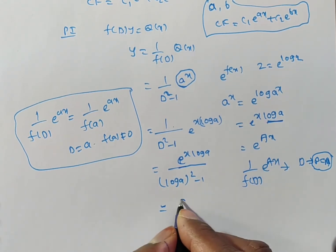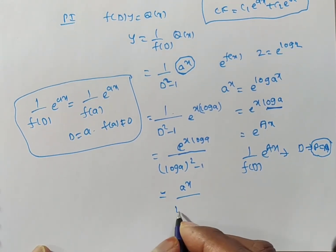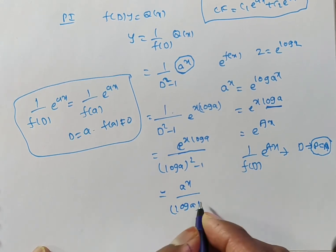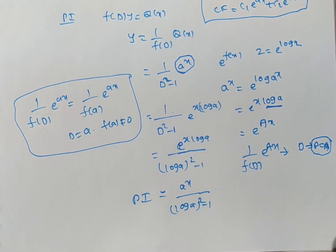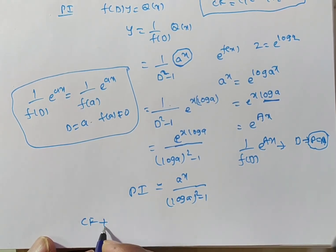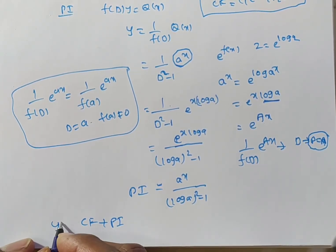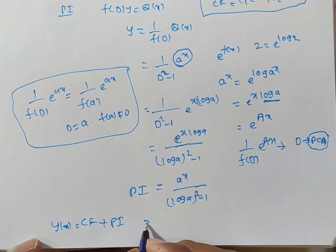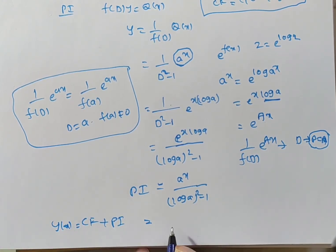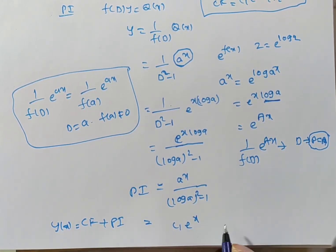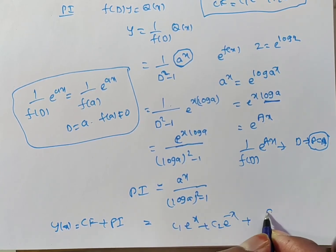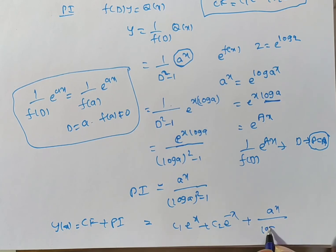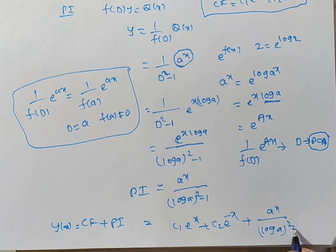Writing e^(x·log a) back as aˣ, the particular integral is aˣ / ((log a)² - 1). The general solution is complementary function plus particular integral: y = c₁e^x + c₂e^(-x) + aˣ / ((log a)² - 1).